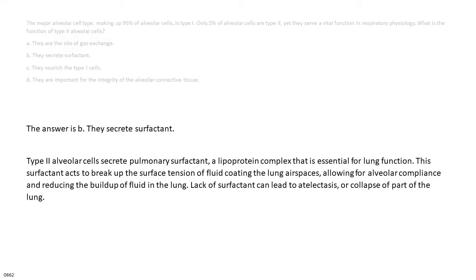The answer is B, they secrete surfactant. Type II alveolar cells secrete pulmonary surfactant, a lipoprotein complex that is essential for lung function. This surfactant acts to break up the surface tension of fluid coating the lung air spaces, allowing for alveolar compliance and reducing the buildup of fluid in the lung. Lack of surfactant can lead to atelectasis, or collapse of part of the lung.